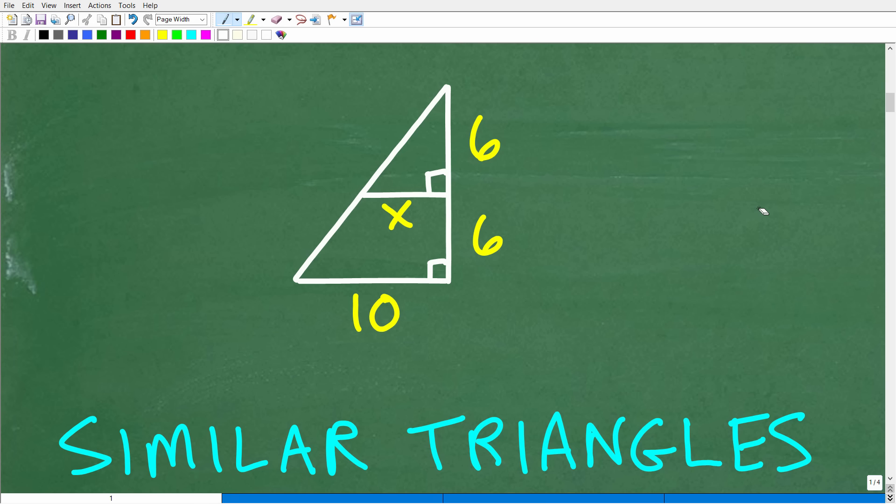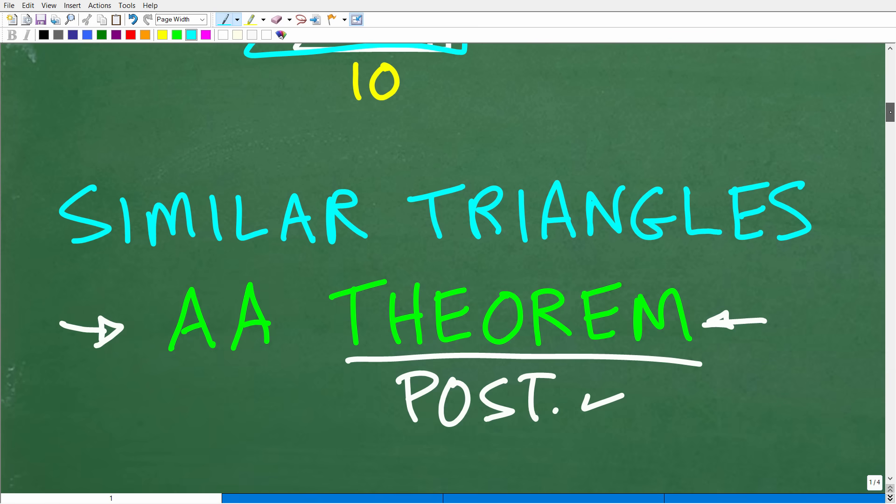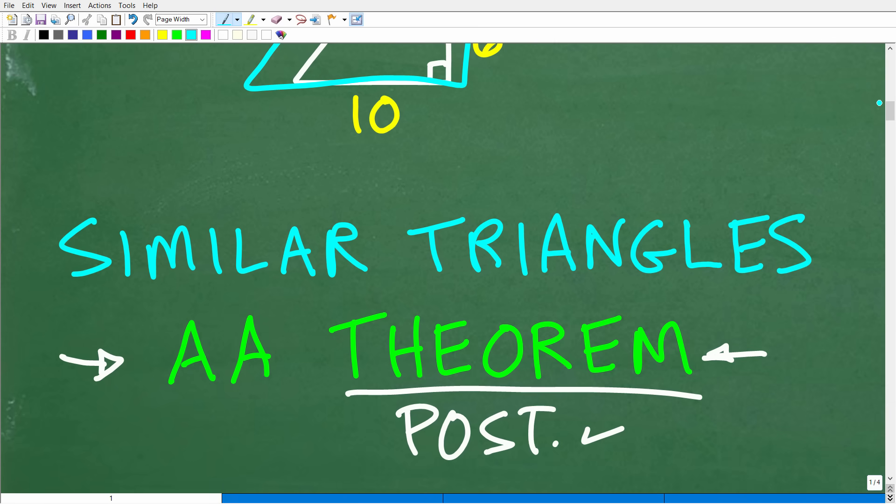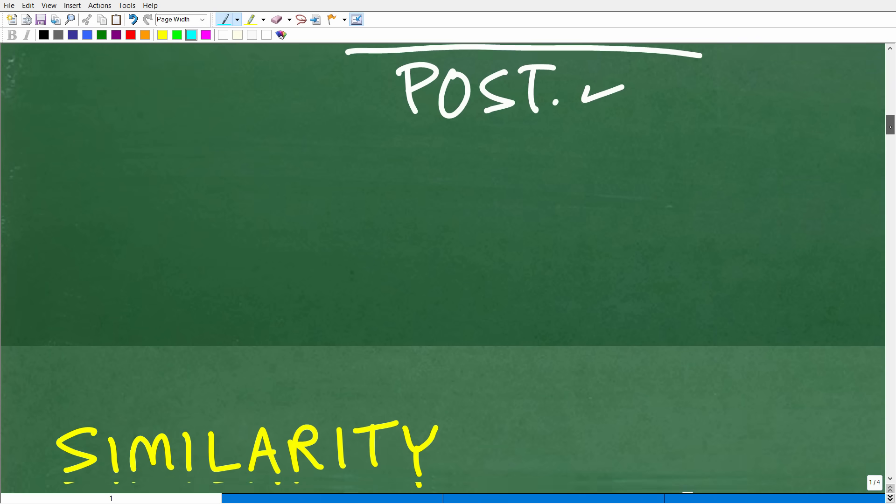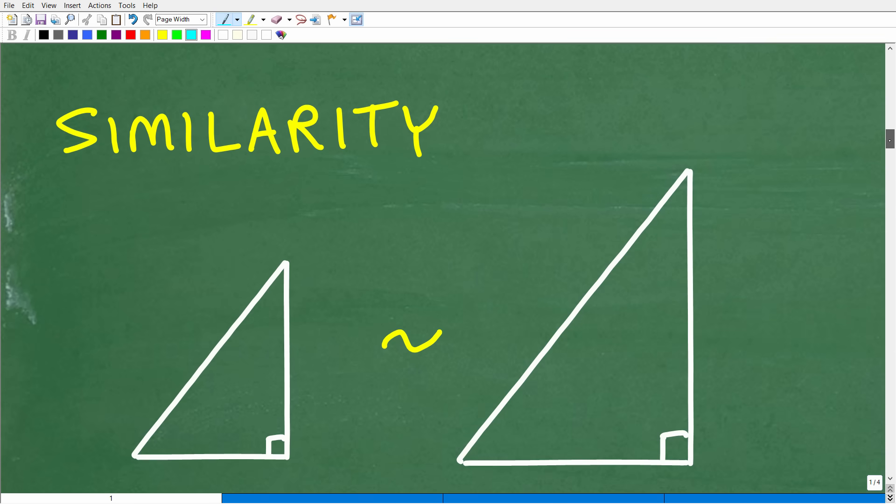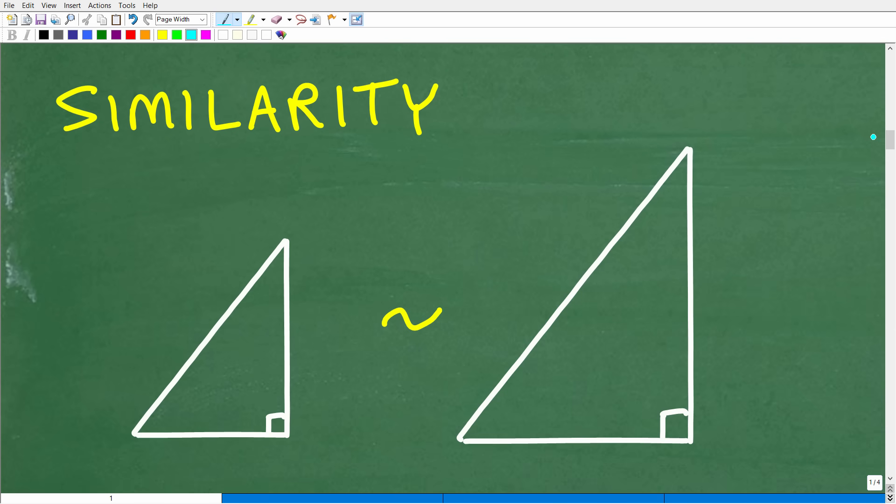But anyways, right here we have similar triangles. Now if you notice our little figure, we have a triangle right here. There's one triangle and then we have this other bigger triangle. And these two triangles are similar triangles. So what is a similar triangle? Well, we need to understand that and then we need to understand this angle angle theorem. So let's go ahead and talk about similarity.